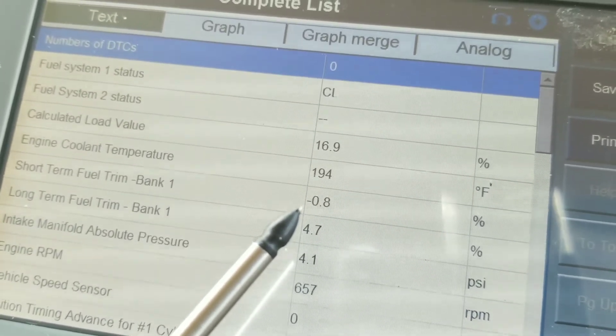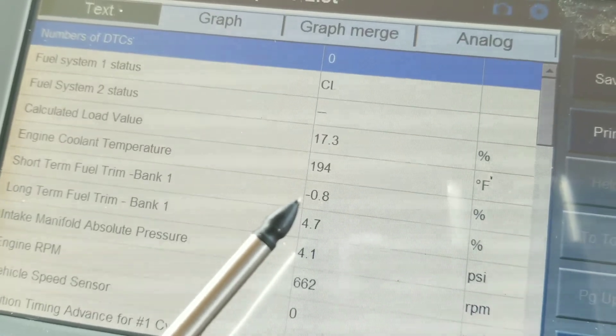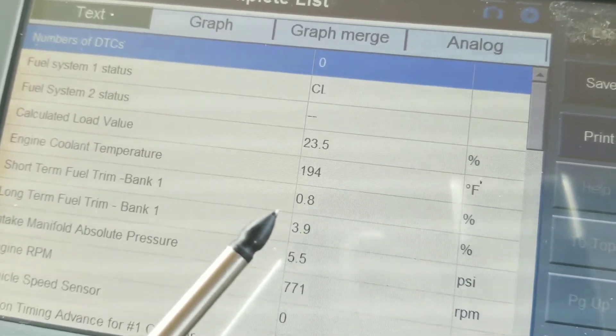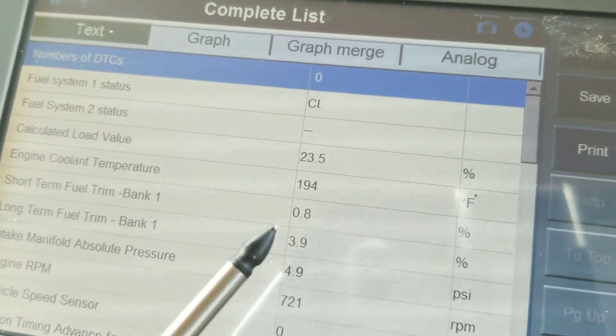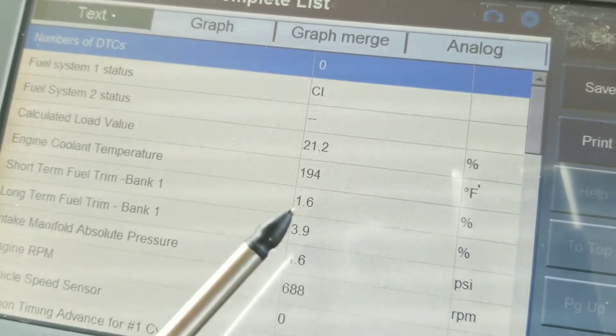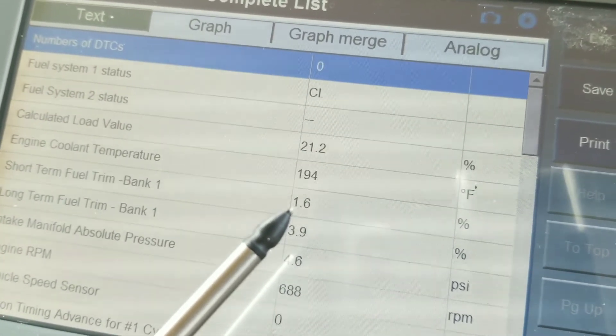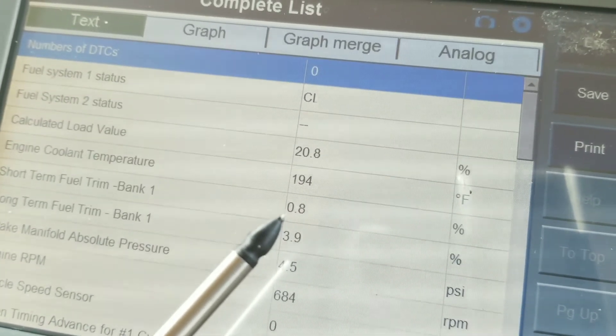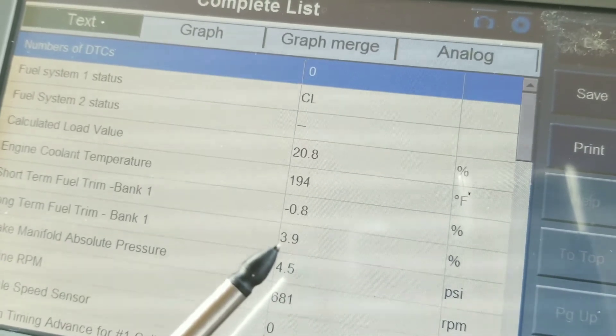Now however, if you have an intake leak unmetered air, then you're looking at something a little bit different. With unmetered air, you're going to have to deal with, so it's going to raise this up, the short term fuel trim, and as it goes up, it's going to cause the long term fuel trim to go up.